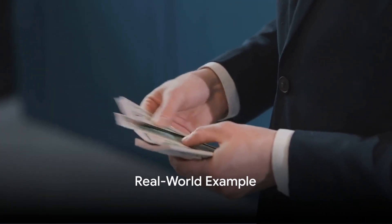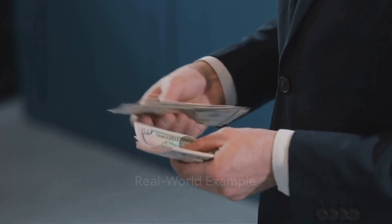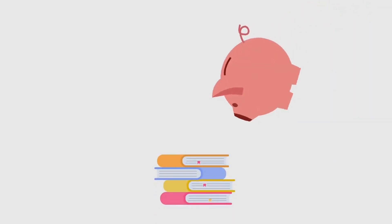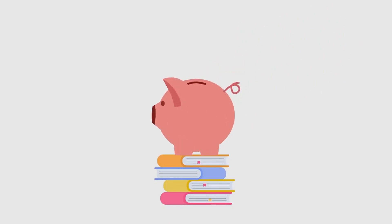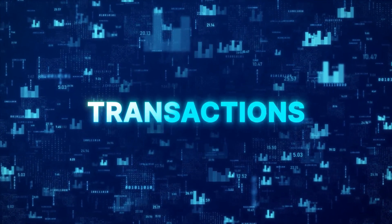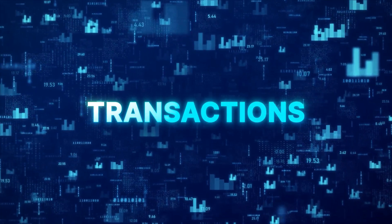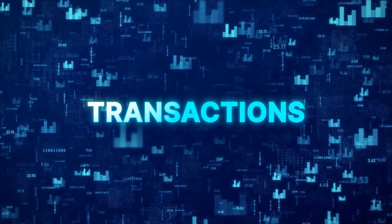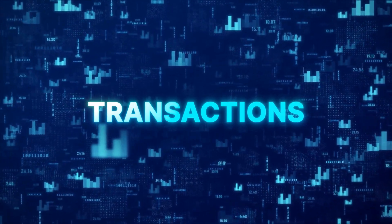To give you a real-world example, imagine you're studying abroad and need money for tuition. Your parents would instruct their bank to transfer the funds to your university's bank. Their bank would then send an MT-103 message to your university's bank with all the necessary details for the transfer.